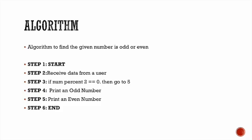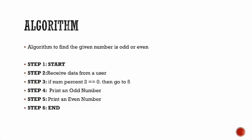The next question is: algorithm to find whether the given number is odd or even. If you have a number, it is either an odd or even number. Odd numbers are 1, 3, 5 and even numbers are 0, 2, 4, 6. That's the question.